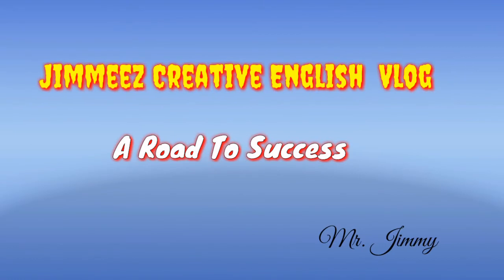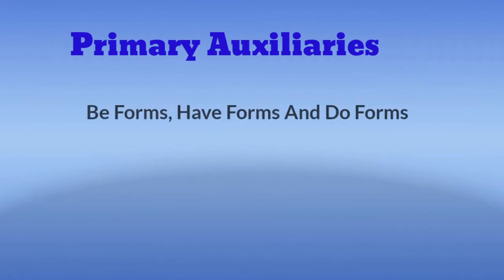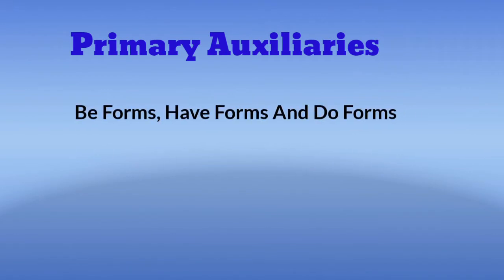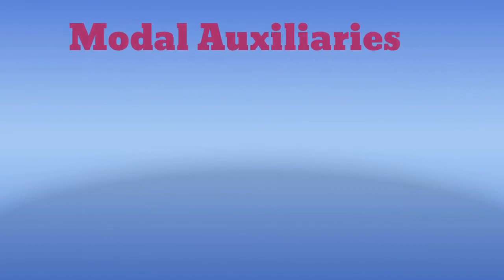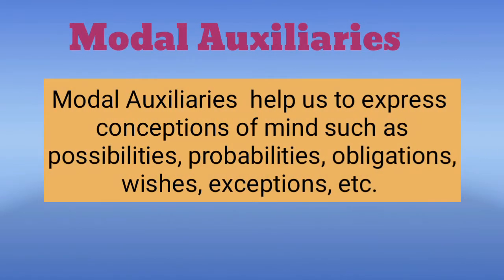Hi everybody, welcome back. We have learned what auxiliary verbs are and its first kind — primary auxiliaries — earlier: be forms, have forms, and do forms, which help merely to express statements of facts. We will learn the second kind of auxiliary verbs today: modal auxiliaries. Modal auxiliaries help us to express conceptions of mind such as possibilities, probabilities, obligations, wishes, and exceptions.